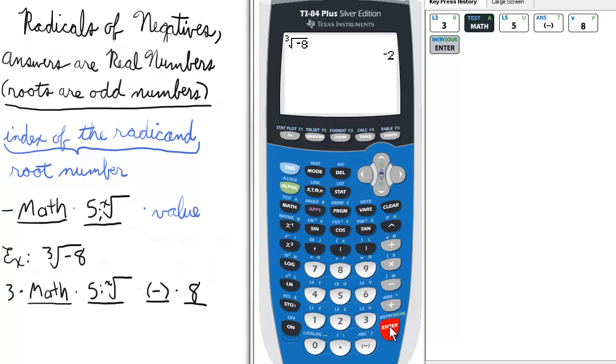Two more examples. Let's find the fifth root of negative 243. So first we press 5 for the fifth root, and then math, 5, to show that 5 is the index of the radicand, and then negative for the negative sign, 243, enter. So the fifth root of negative 243 is 3.